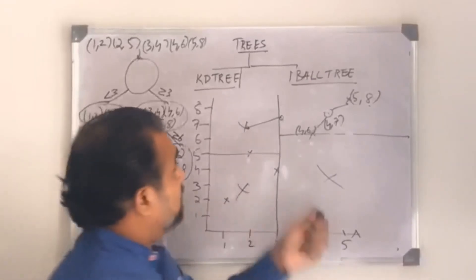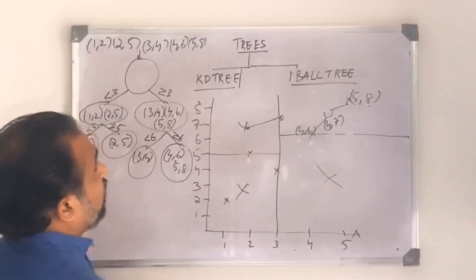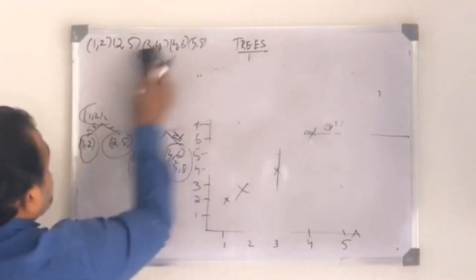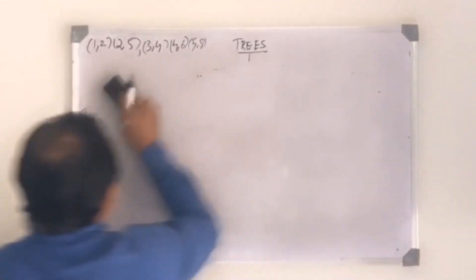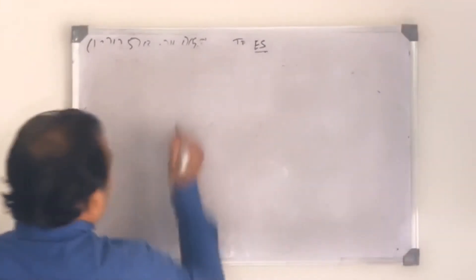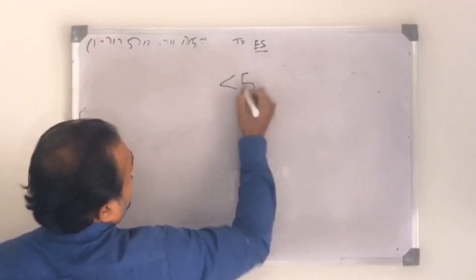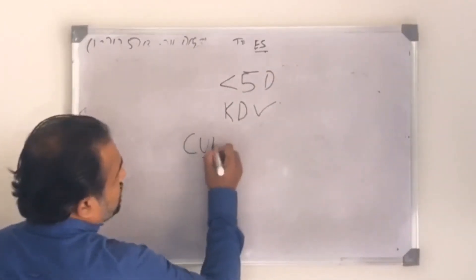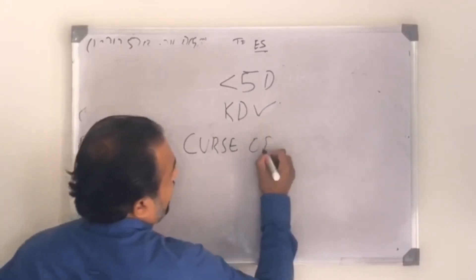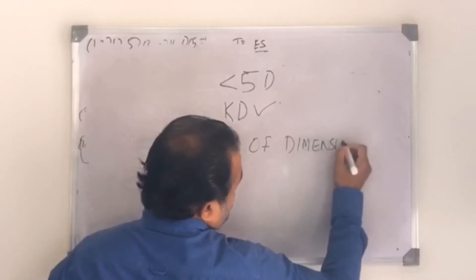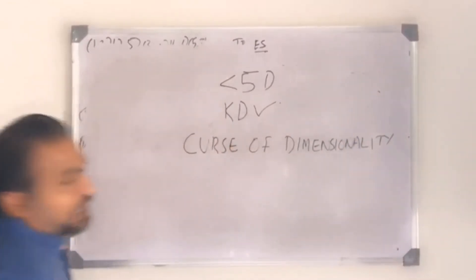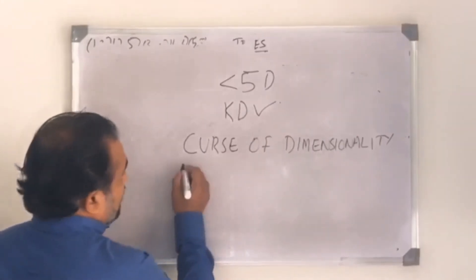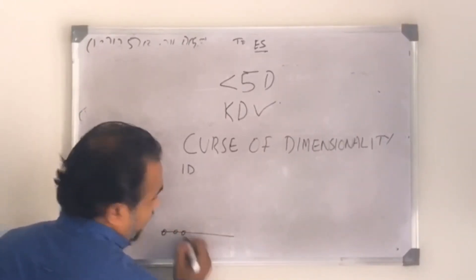Another limitation of KD trees is that they don't work well in high-dimensional data. When data points have high dimensions — say more than 5 dimensions — something called the curse of dimensionality kicks in, making it very difficult to apply KD trees effectively.